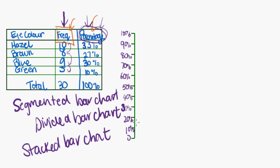So let's start with Hazel. And Hazel had a frequency of 33%. So 33 is about there. And that's the first stack or chunk on my stacked bar chart. And I would have a little legend over here somewhere that said, that is Hazel.